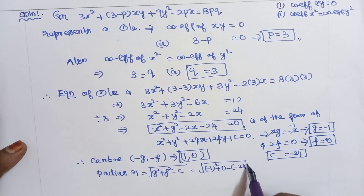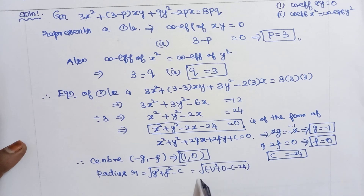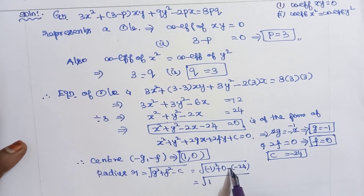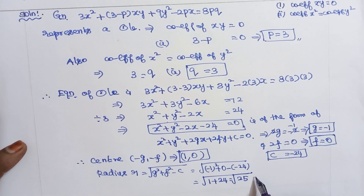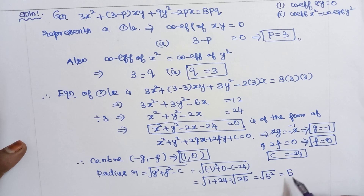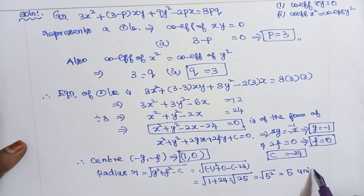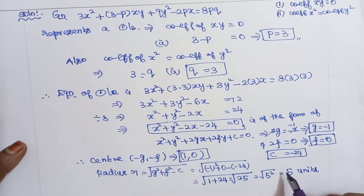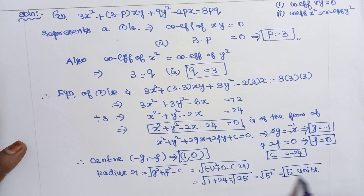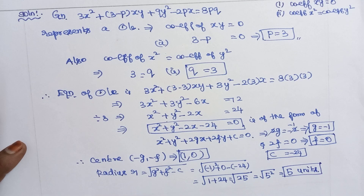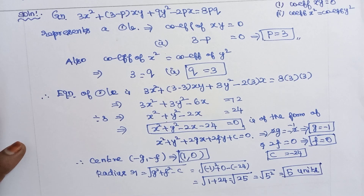Calculating the radius: √((-1)² + 0² - (-24)) = √(1 + 24) = √25 = √(5²) = 5 units. Therefore the radius of the given circle is 5 units, and the center is (1, 0).